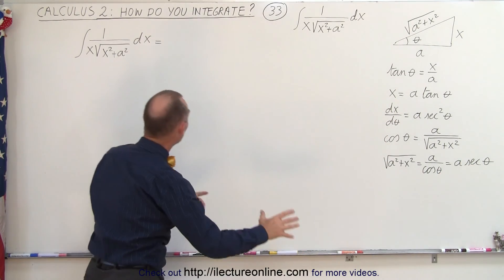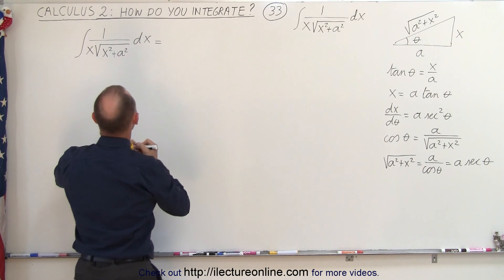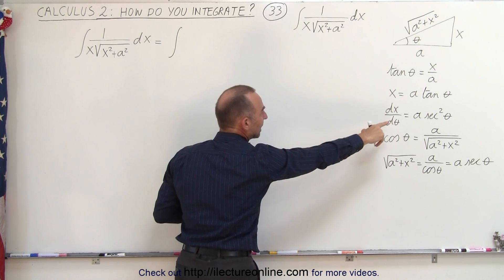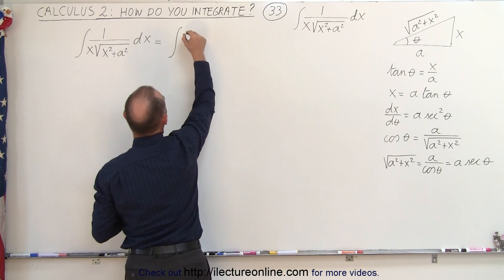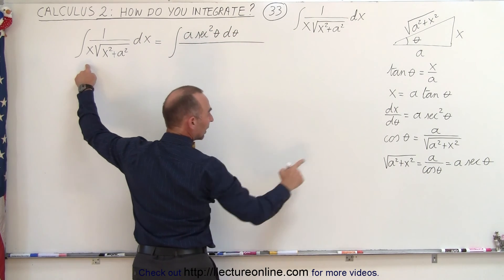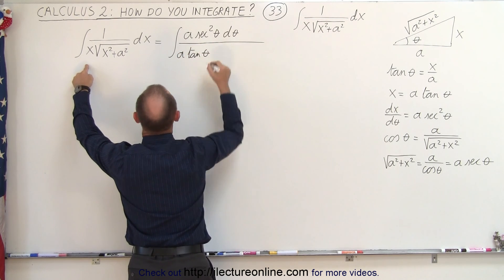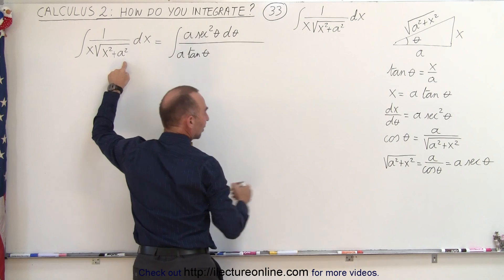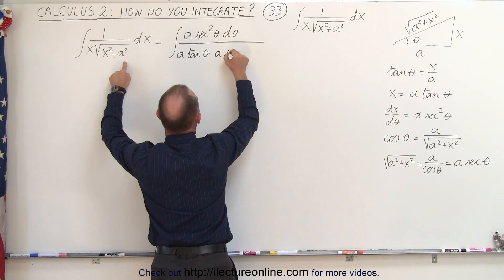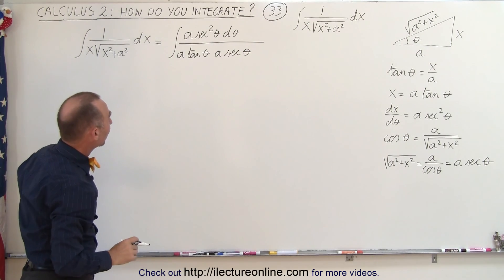So now we're ready to substitute all that into our integral. This is equal to the integral of dx in the numerator, which will be a secant squared theta dθ. In the denominator, we have the product of x — defined as a times the tangent of theta — and the square root of x squared plus a squared, defined as a times the secant of theta.